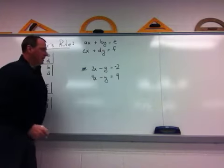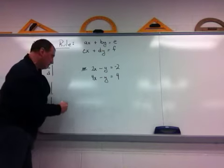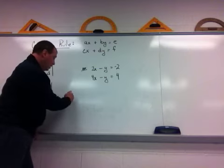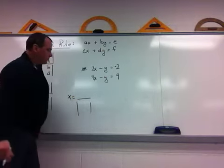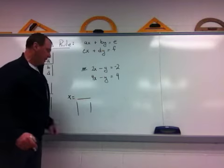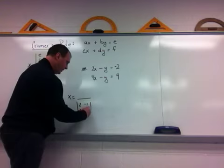Over here I have a system of two equations. I want to know where these two things cross, if in fact they do. So I'm going to set this up using Cramer's rule. Now my coefficients are 2, negative 1, 4, negative 1. So I'm going to use the 2, negative 1, 4, negative 1.